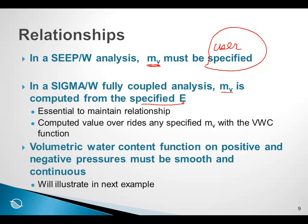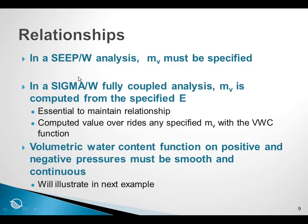These are the key fundamentals of the coupled formulation in SigmaW. The important thing to remember is that we are solving two equations simultaneously. Consequently, we need to specify both sigma-type material properties and seep-type material properties. We must also specify two types of boundary conditions: the SigmaW stress boundary conditions and the SeepW hydraulic boundary conditions. Since we are solving two equations at the same time, there are more boundary conditions and more material properties to specify.